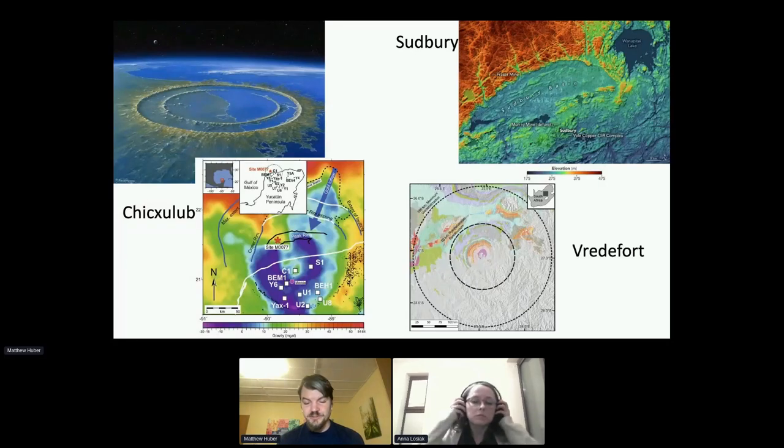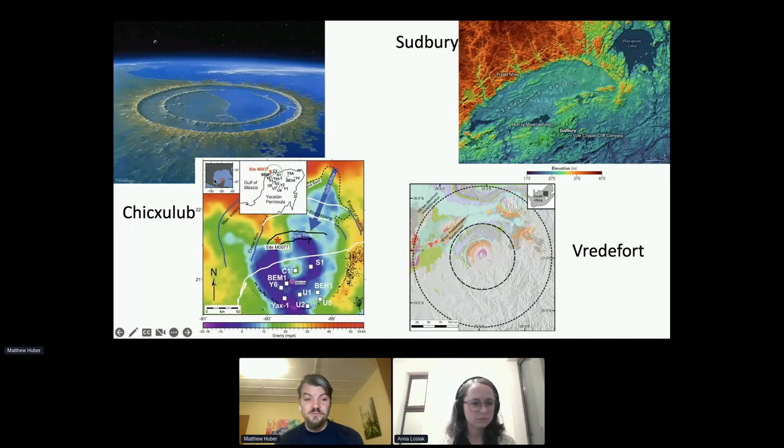On Earth, we have three impact structures that are this size. As Oz was just talking about, Chicxulub is one of the three largest on Earth. On top, we have an artist's rendering of what Chicxulub might have looked like, a very famous image. On bottom, we have a gravity signature. The reason why we have to look at Chicxulub that way is because it's completely buried. It's well preserved but not exposed on the surface.